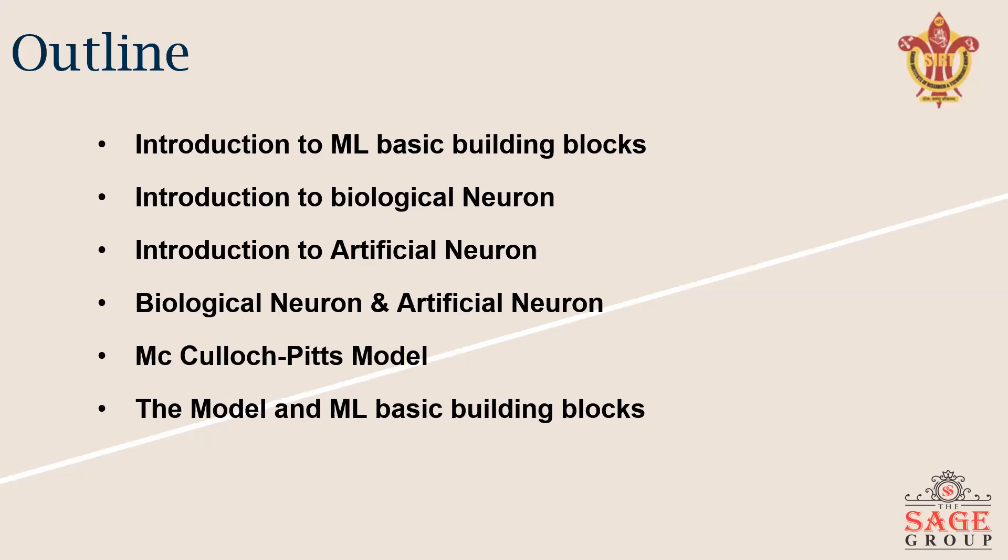Here are the basic outlines of the course. First, we discuss the introduction to Machine Learning basic building blocks. Then we talk about the introduction to biological neurons, followed by introduction to artificial neurons. We give the contrast between biological neurons and artificial neurons, and then we discuss the first neuron model, McCulloch-Pitts model. Then we'll see how the McCulloch-Pitts model relates to Machine Learning basic building blocks.